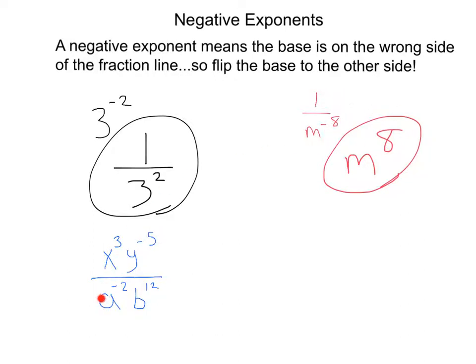Here we've got x to the 3rd, y to the negative 5, all over a to the negative 2, b to the 12. This x to the 3rd is positive, so we'll leave that in the numerator. The y to the negative 5 is a negative exponent, so we'll move that to the bottom.